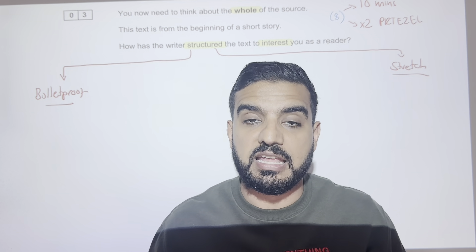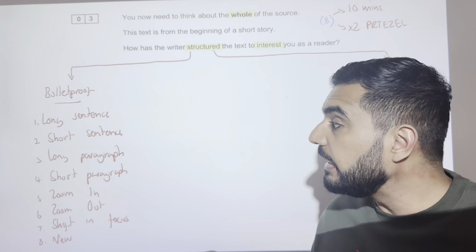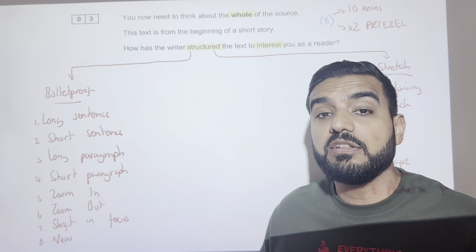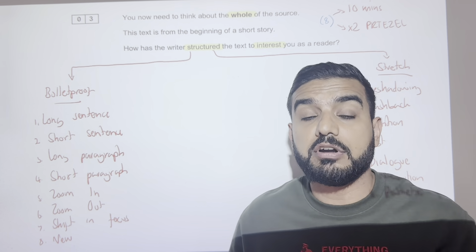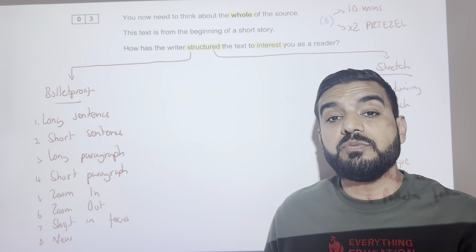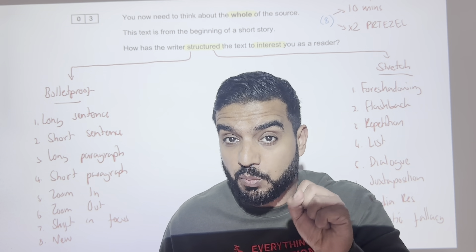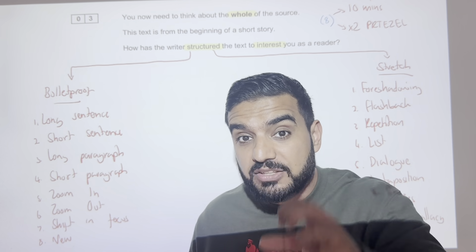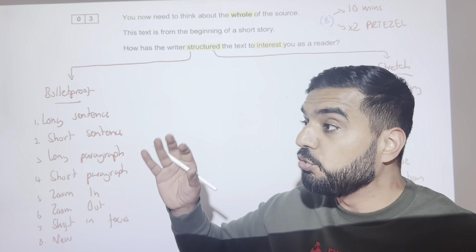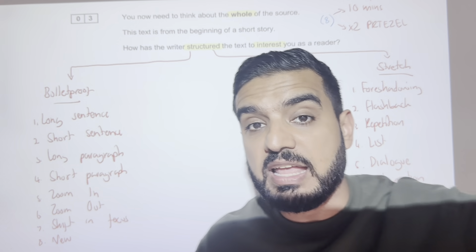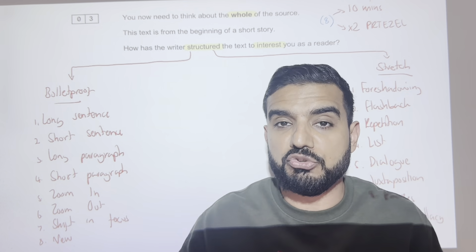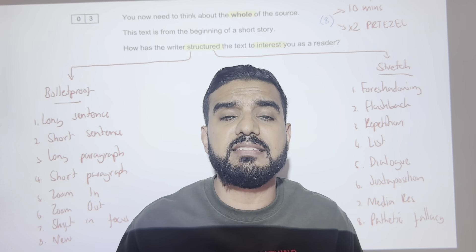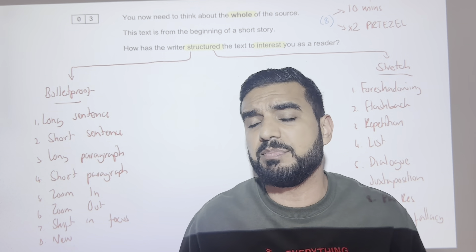What are these eight bulletproof structural devices? In Source A there will always be a long sentence, and because there is a long sentence there will be a short sentence. There will be a long paragraph and there will definitely be a short paragraph. Writers will always zoom in on detail and talk about something, and when they zoom in they will always zoom out. They will also shift focus — going from one subject to another — and finally, something new will always be introduced, such as a new character, setting, or time.